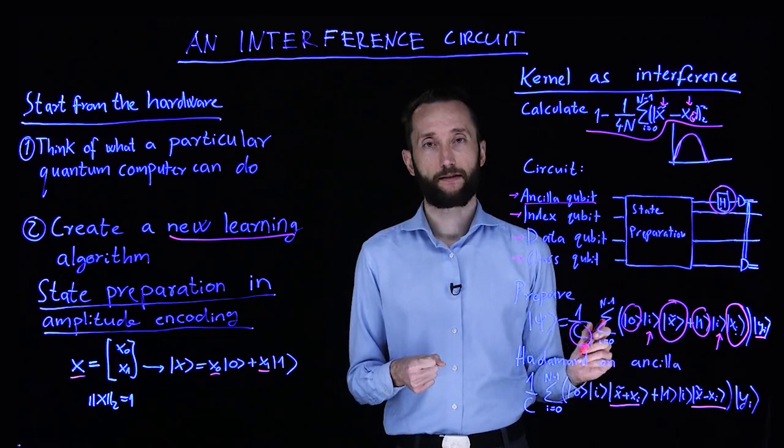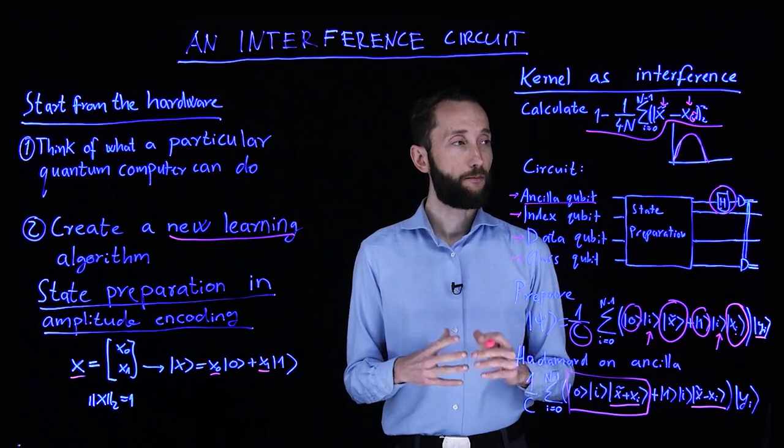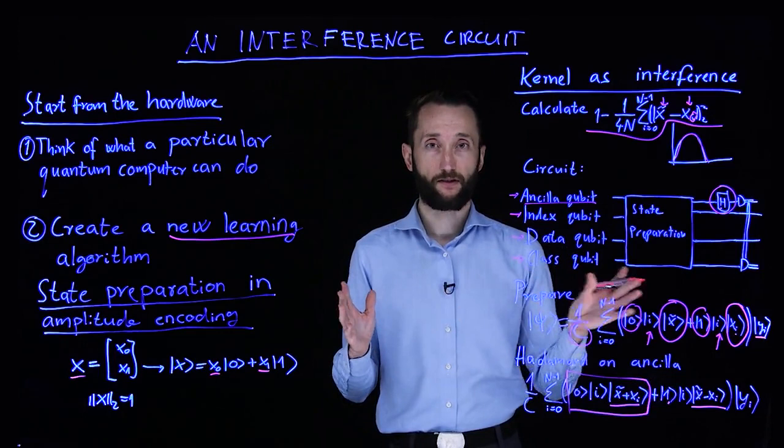And now what we do is we do a measurement on the ancillor if you have a certain probability of success. So by success, I mean that the superposition collapses to this particular part. And based on this, if we get the output one, then we just discard the result and run the circuit again.